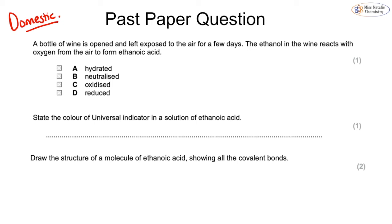A bottle of wine is opened and left exposed to the air for a few days. The ethanol in the wine reacts with oxygen to form ethanoic acid — what type of reaction is this? As discussed in the alcohols topic and at the start of this video, this is an oxidation reaction. We also want to state the colour of universal indicator in a solution of ethanoic acid — the answer is yellow or orange. You might see red accepted in an exam, but I'd avoid it because red is more for strong acids, whereas carboxylic acids are weak.